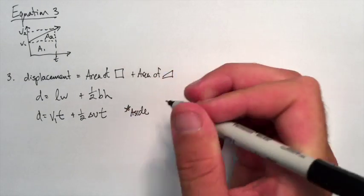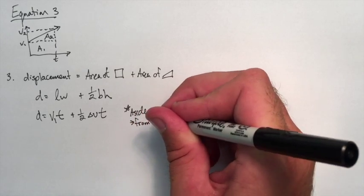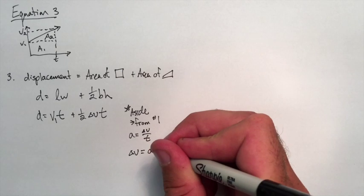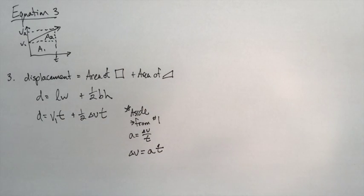But what does this mean? We have to remember from equation one that acceleration is delta V over T. So that means delta V, if we rearrange it, is A times T. We're going to substitute that in for the delta V.